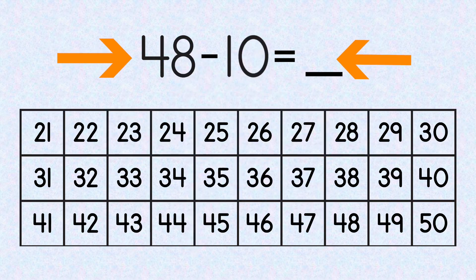Now let's take a look at our second number sentence: 48 minus 10 equals blank. First of all, find 48 on our hundreds chart. Now remember, when we added 10, we went down to the block below.